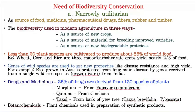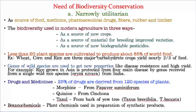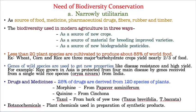There are three reasons for which we need to conserve biodiversity. The first reason is narrow utility. Narrow utility includes biodiversity we are using as a source of food, medicine, pharmaceutical drugs, fiber, rubber and timber. Biodiversity is used in modern agriculture in three ways: as the source of new crops, as the source of material for breeding improved varieties, and as the source of new biodegradable pesticides.